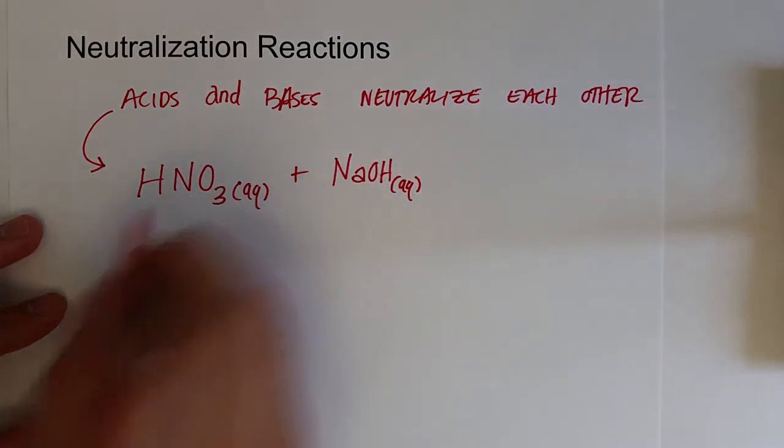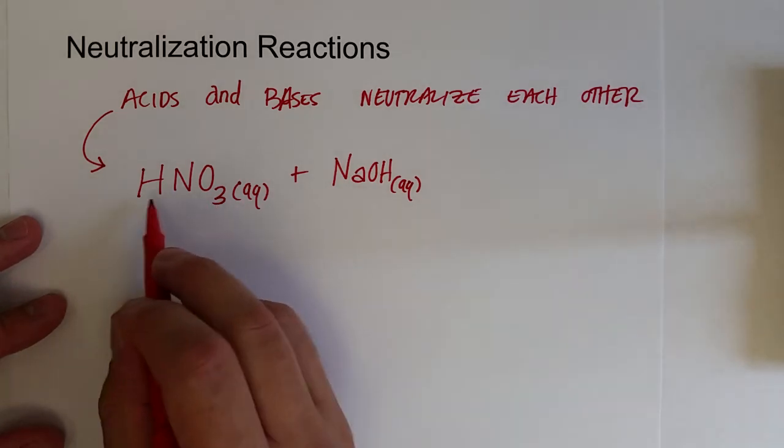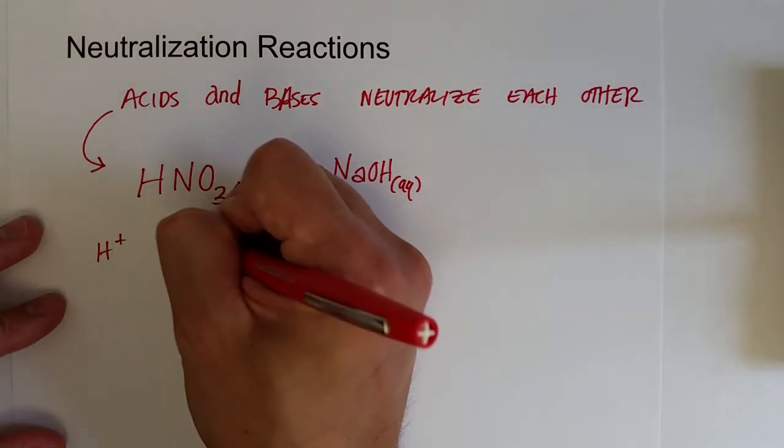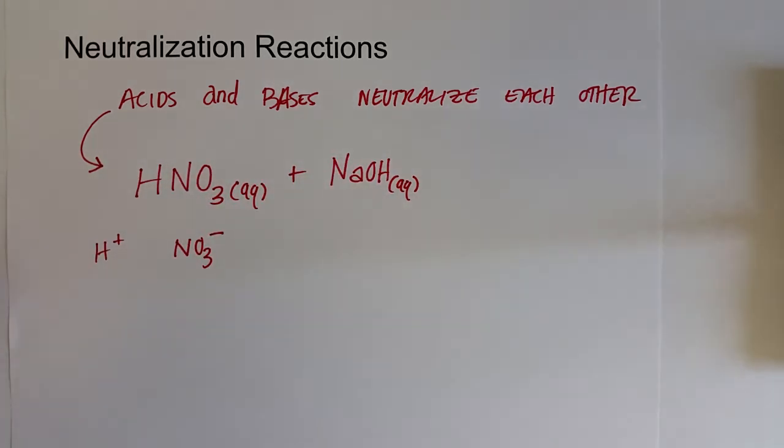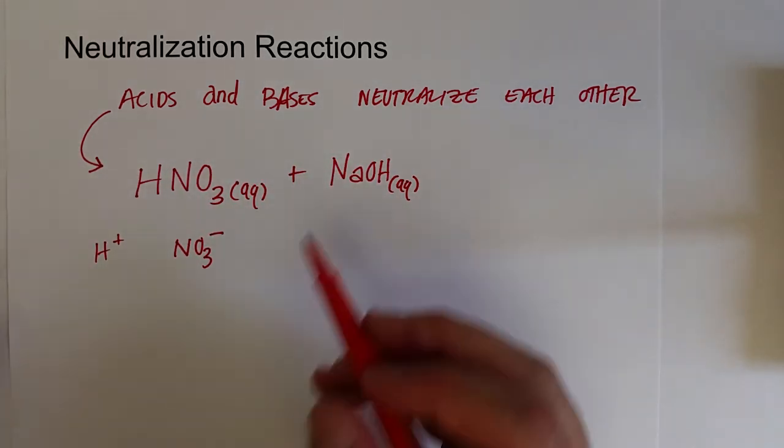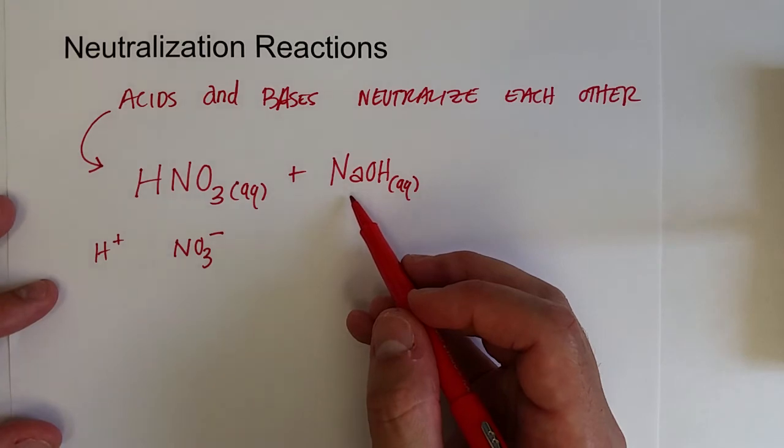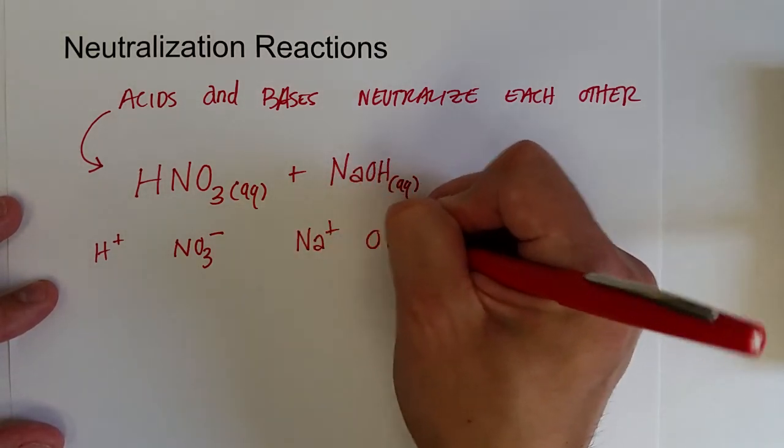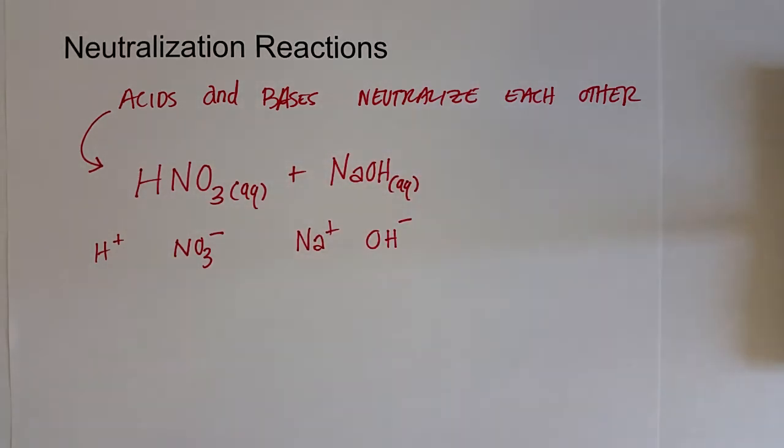So this is a strong acid. So we know we really don't have any HNO3 in solution. What we really have is H plus ions and nitrate ions swimming around in solution. Sodium hydroxide is a soluble ionic compound and so we know it dissociates 100%. So we really have sodium ions and hydroxide ions swimming around.